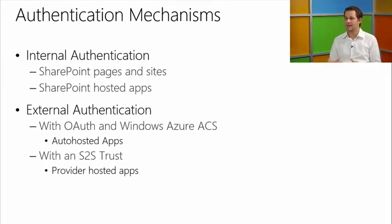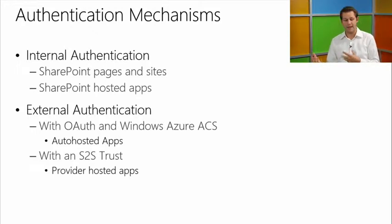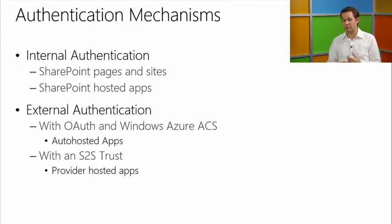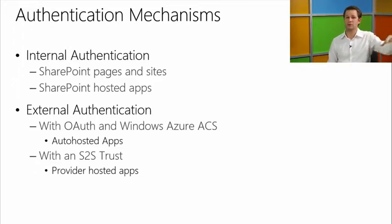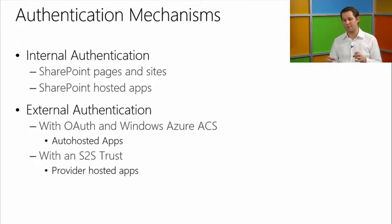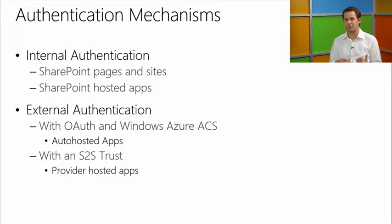On prem, you can still do provider hosted apps, but you may not have access to Azure Access Control Services to facilitate OAuth. You've got two choices: you can set up server-to-server trust — S2S — which is a certificate-based system used between SharePoint and Exchange, and also between a provider hosted app and SharePoint. Or there's a hybrid model where you configure your SharePoint farm to use Azure ACS and still do OAuth. Both are more advanced topics with material available on MSDN.